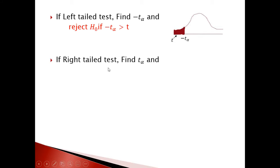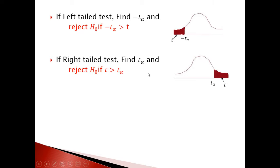For a right tail test, find t-alpha and reject H₀ if t is greater than t-alpha, as shown in the picture.